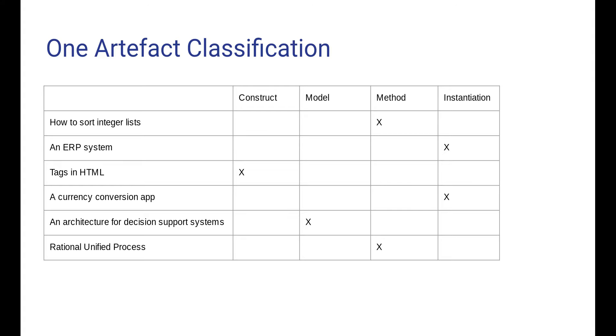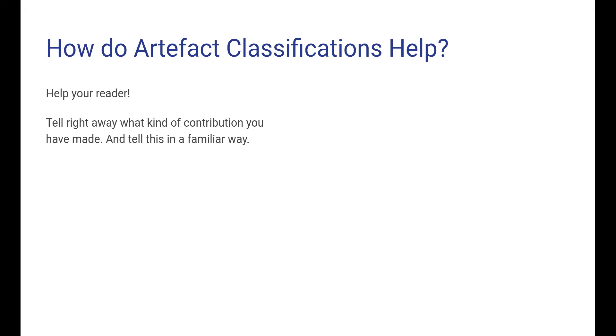Now, you could wonder why would this help? How do they help? Well, the most basic answer could be that artifact classifications help your reader. When you are going to present what you have done, what is your contribution, it's quite helpful to be able to formulate the kind of contribution in a simple and easily understandable way. You tell the reader,